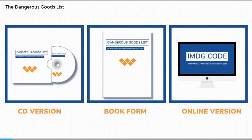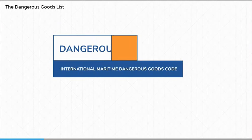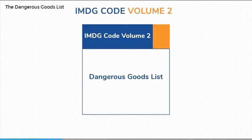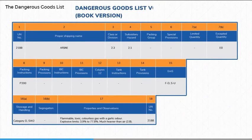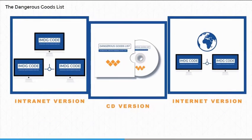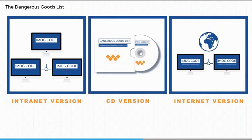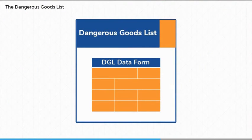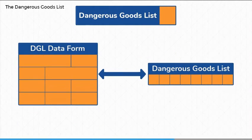Now that we know more about how the IMDG code is structured, let's focus on the key parts of the IMDG code: the Dangerous Goods List, or DGL. The traditional book version of the DGL is in Volume 2 of the IMDG code. For further information, it requires the user to refer to the part and section reference shown below the column number. Internet, intranet, and CD versions use a data form with the text and numbers and links in blue. Clicking links will take the user to the relevant parts of the instructions or table within the IMDG code. This format uses data fields labelled according to the traditional book version of the Dangerous Goods List. Throughout the module, we will refer to these data fields as column numbers, following the traditional format.